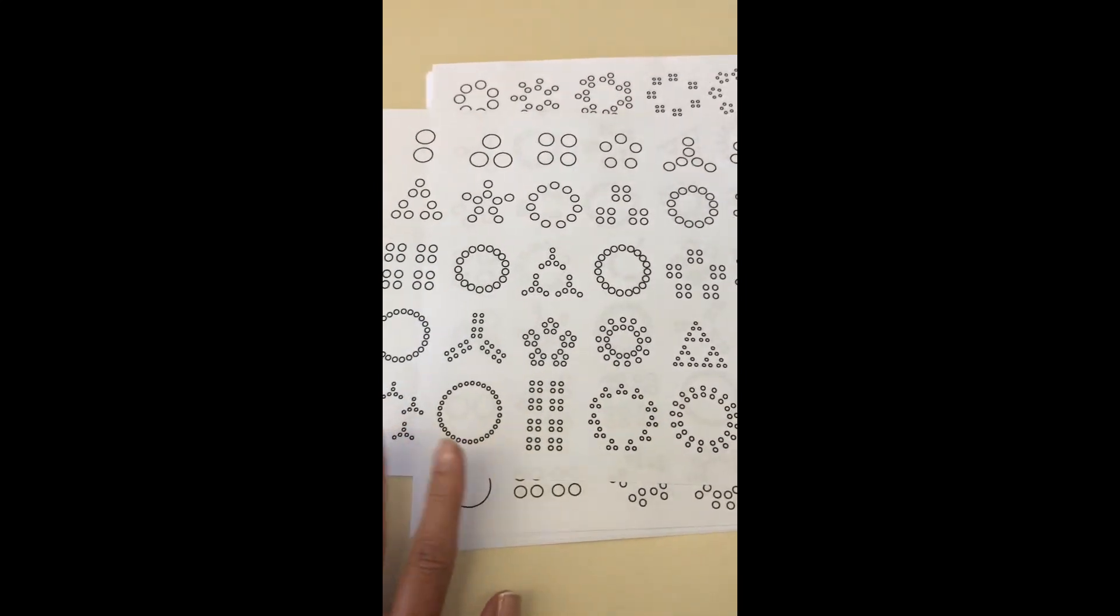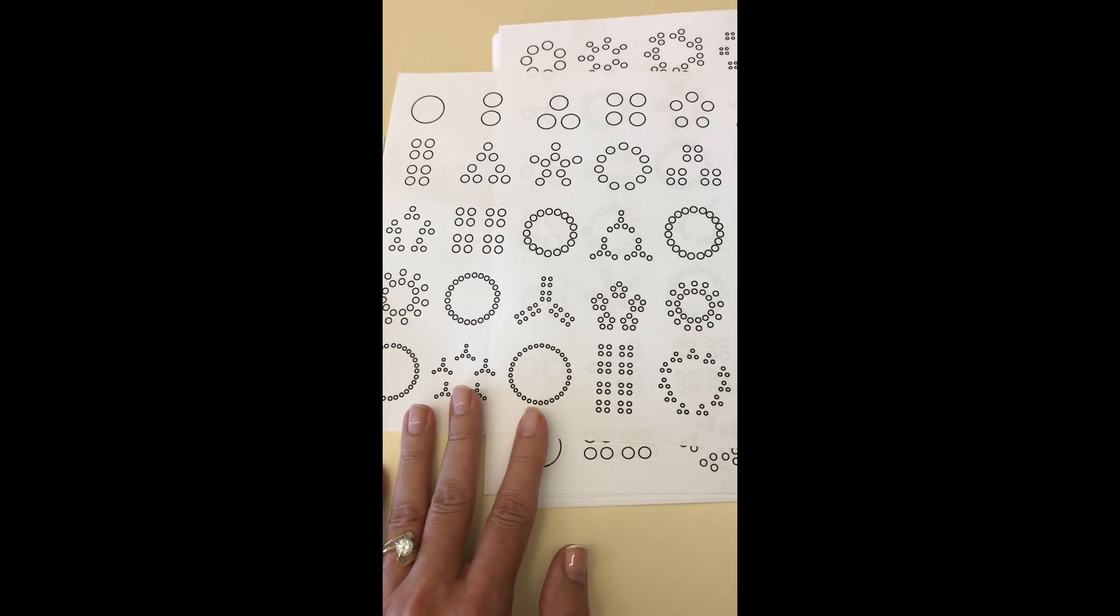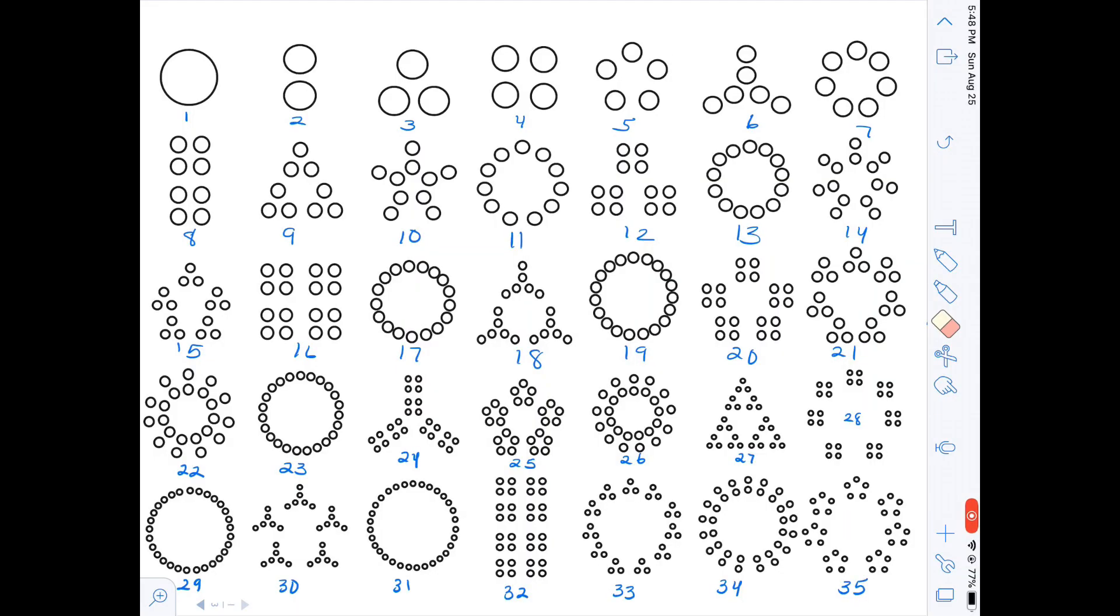The first thing that most students noticed was the consecutive order—that each visual represented a number and the one after that was the next number. So they labeled 1, 2, 3, 4 and so on all the way up to 35. Some students explained this pattern as a plus one, so each visual increases by one.